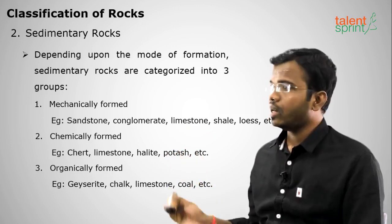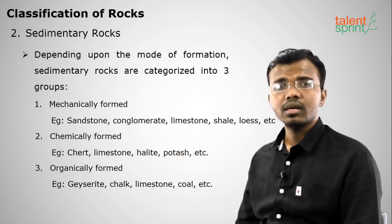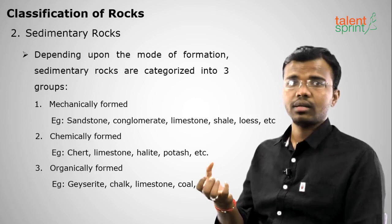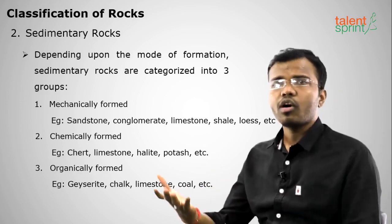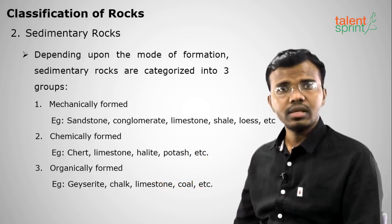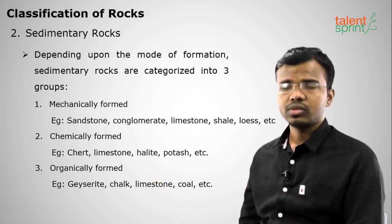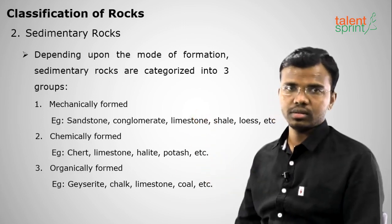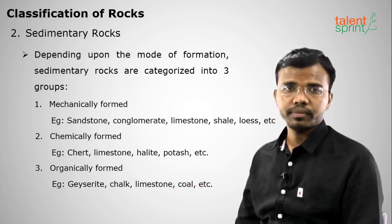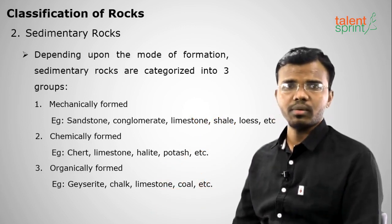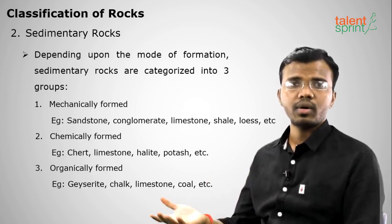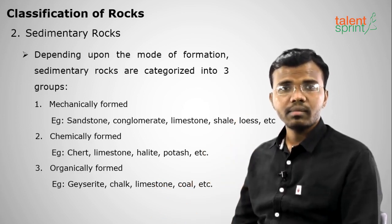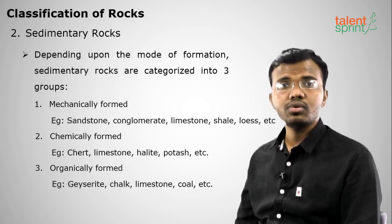Organically formed sedimentary rocks involve decaying plant and animal matter. After 50 to 100 years, this decay forms coal, petroleum, and natural gas. Examples include geyserite, chalk, limestone, and coal. Coal is the best example — and near coal you also find petroleum and natural gas, all because of decayed plant and animal matter from long ago.